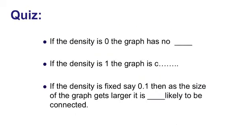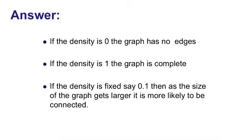So here's a few questions. Density is 0, the graph has no what? Density is 1, the graph is what? The C word. If density is fixed, say, to some size, and the graph gets larger, what can we say about how likely it is to be connected? Take a second to look at that. Okay, as we just said already, 0 means the calculation says no chance. You're never going to stick an edge in. 1 means you're always going to stick an edge in. So it's going to be a complete graph.